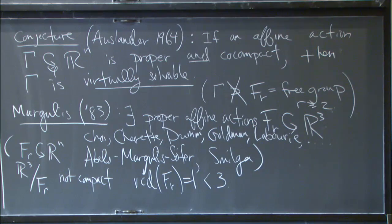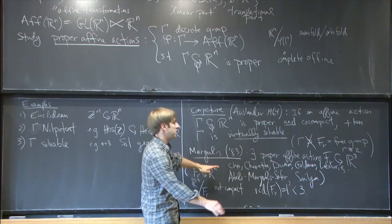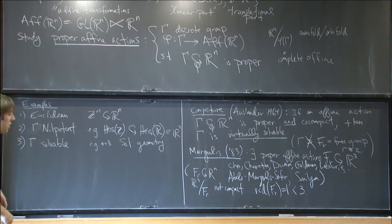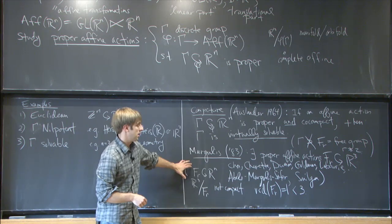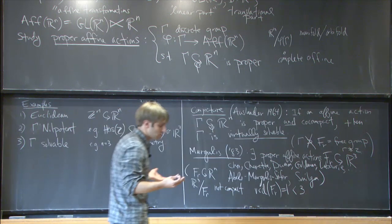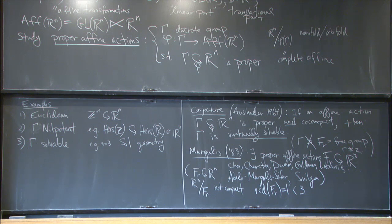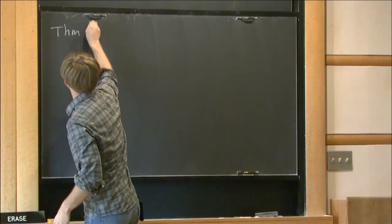Other than these free group examples, essentially no examples of non-solvable groups are known that act properly by affine transformations. There are no interesting proper affine actions known of groups of high cohomological dimension. So the natural question is: maybe it's too hard to make something co-compact, but let's start by trying to make proper affine actions by discrete groups that are not products of solvable and free groups and which have high cohomological dimension. That's what the main result is about.